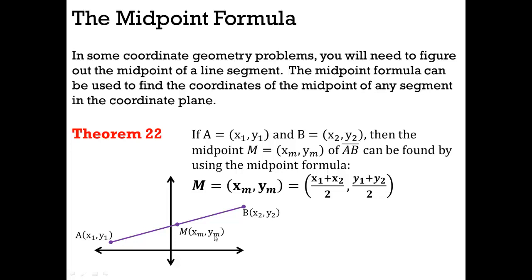If we have A at x1, y1 and B at x2, y2, then the midpoint M, xm, ym of segment AB can be found by using the midpoint formula, which is this: x1 plus x2 divided by 2, y1 plus y2 divided by 2. Looks like a lot up there, but basically all you're doing is you're taking this x, adding it to that x, and then dividing by 2. And then take that y and that y, add them together, divide by 2, and it'll give you that. Not hard at all.